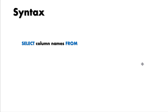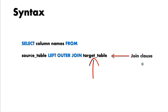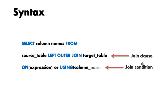First we have our SELECT statement where you can specify column names from all those tables which are participating in your join query, and these column names are followed by keyword FROM. Then we have our join clause, which is the left outer join, and on both sides of our join clause we have our tables which are the source and target table. Followed by our join clause we have our join condition — basically we have two types of join condition that we can use one at a time but never together.